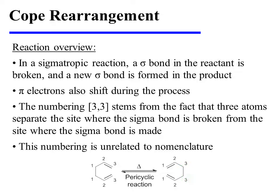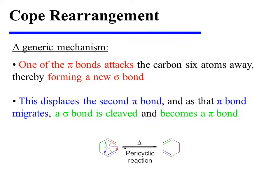This numbering is unrelated to nomenclature. When drawing a mechanism for the COPE rearrangement, one of the pi-bonds attacks the carbon six atoms away, thereby forming a new sigma-bond. This displaces a second pi-bond, and as that pi-bond migrates, a sigma-bond is cleaved and becomes a pi-bond.